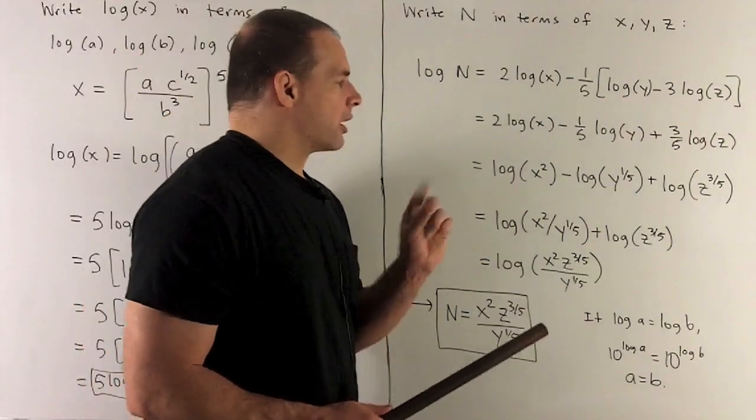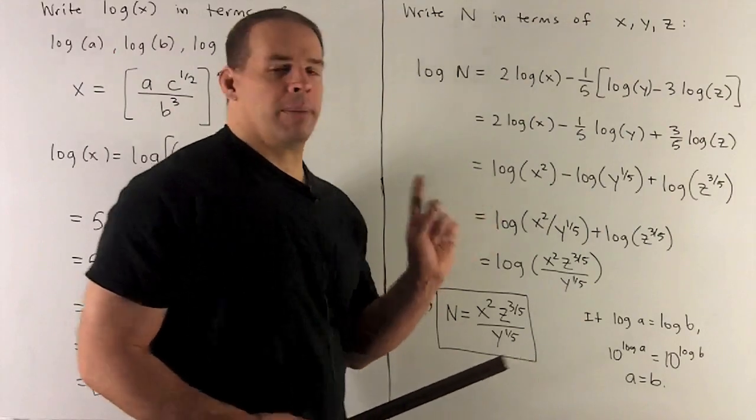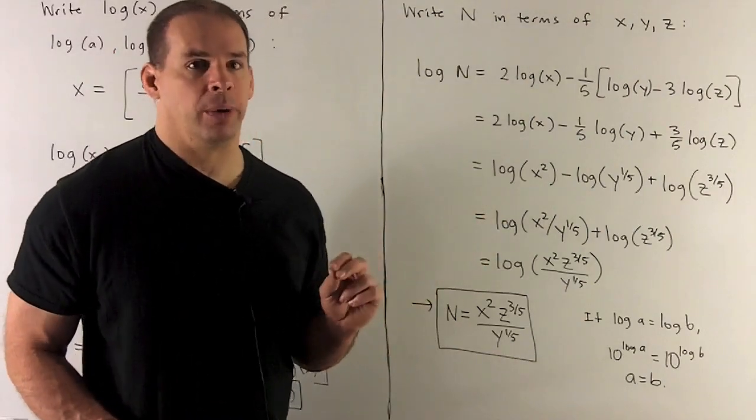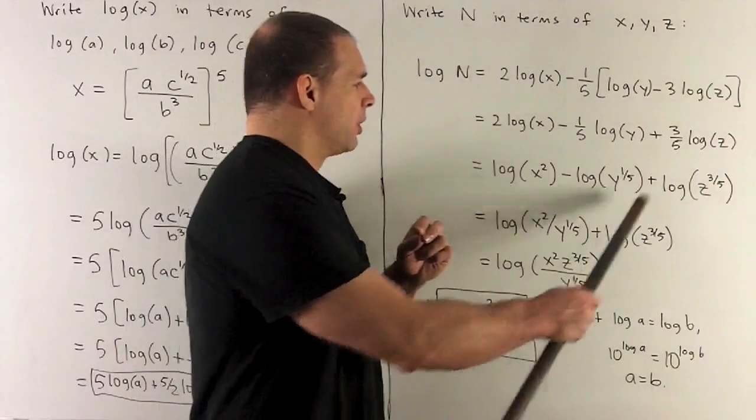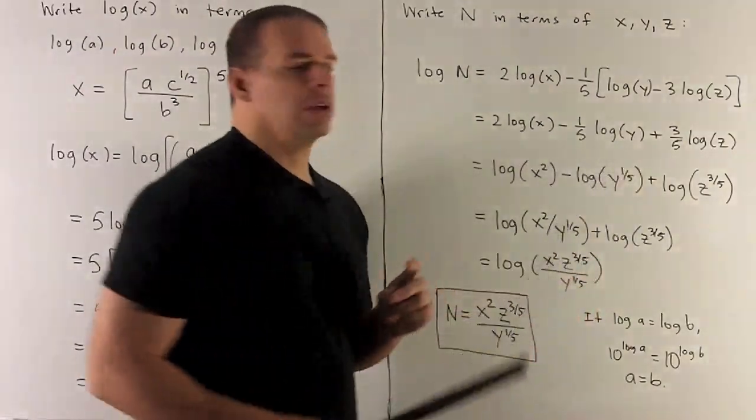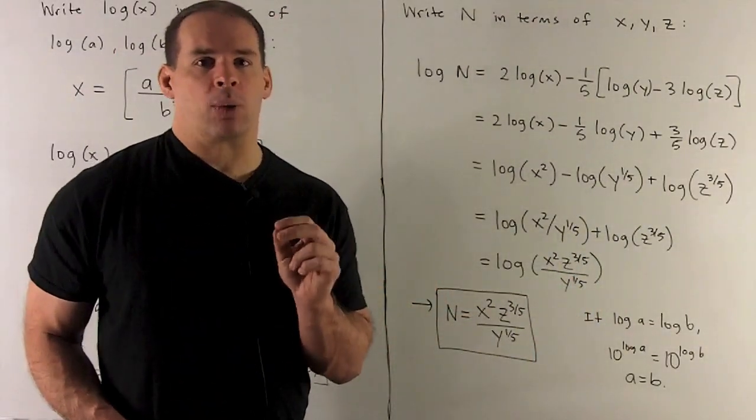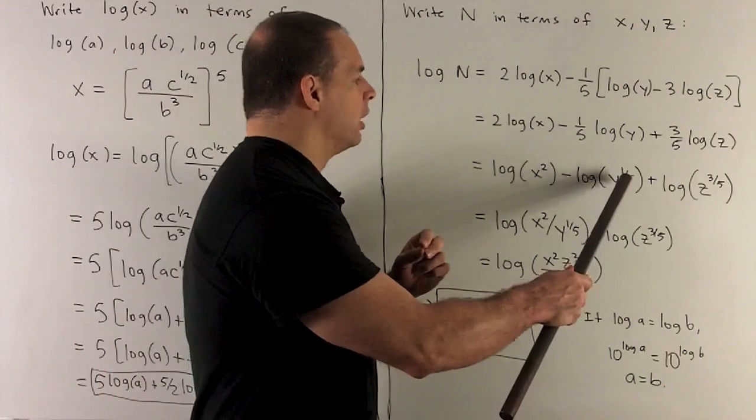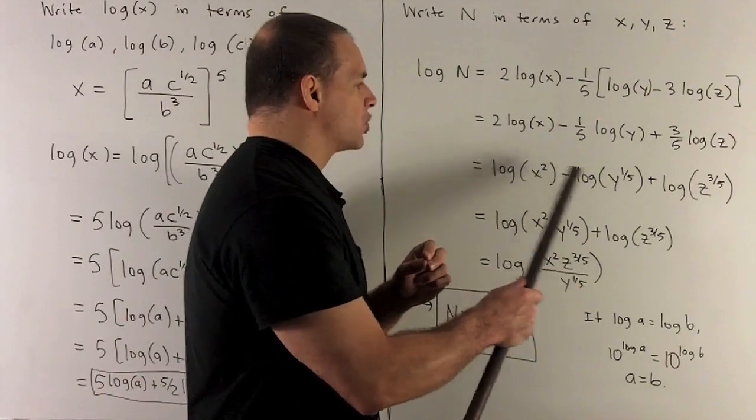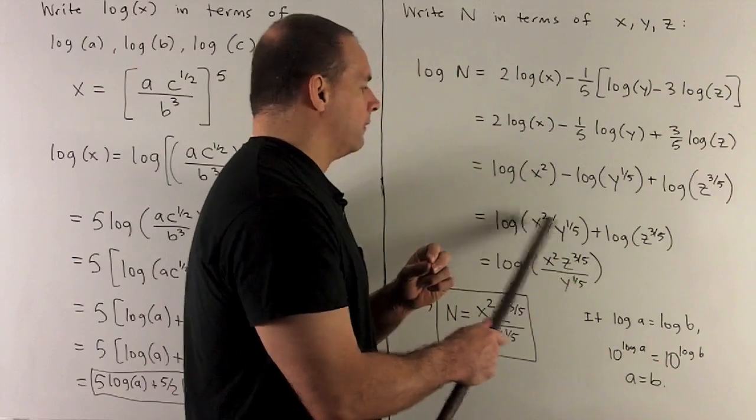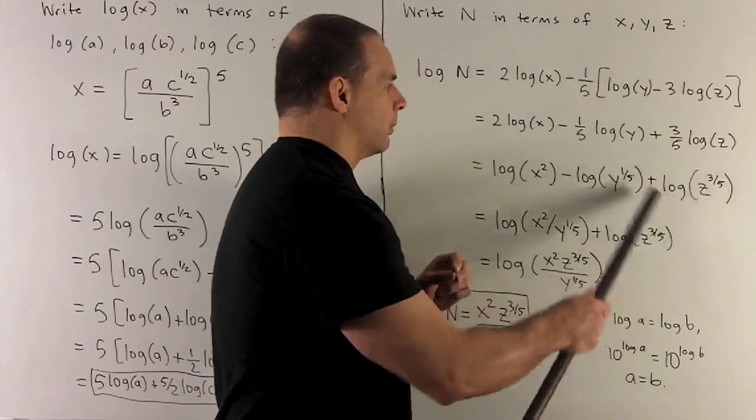Now, we can start combining things. It doesn't matter what order you combine as long as you're consistent in what you do. I'm just going to combine our first two terms first. So we're going to use the quotient rule backwards. I have a difference here, so I can rewrite this as log of X squared over Y to the 1 fifth.